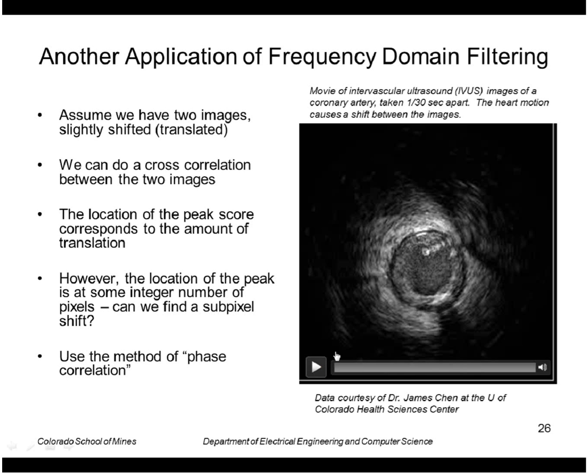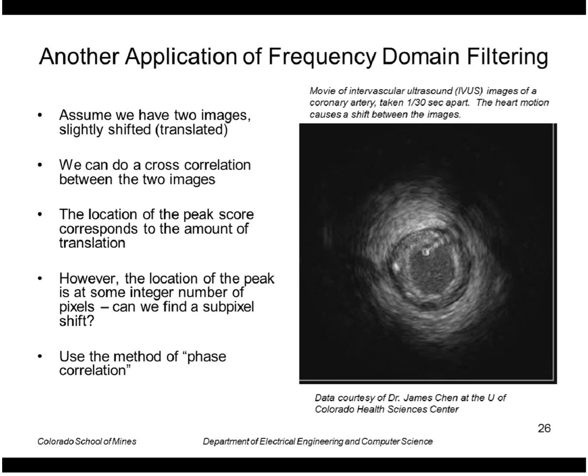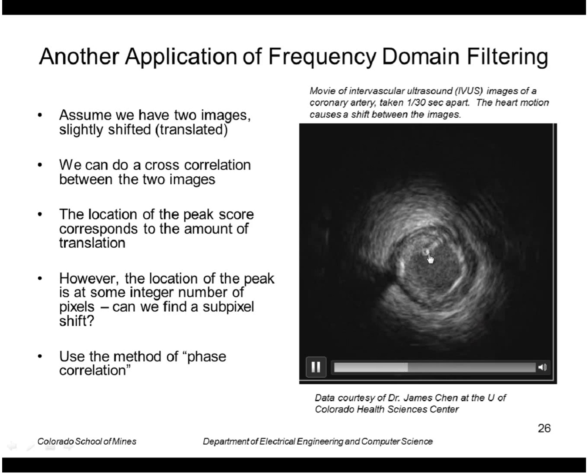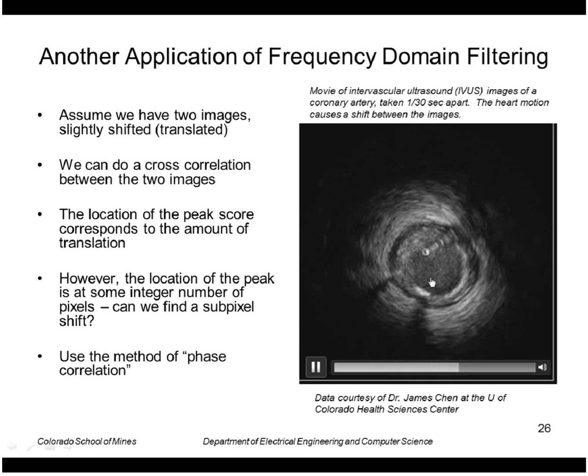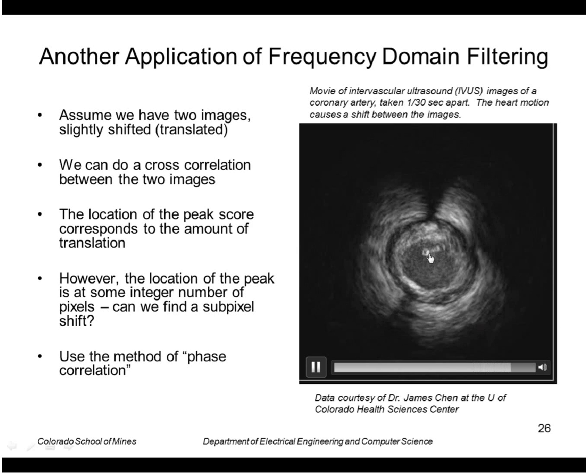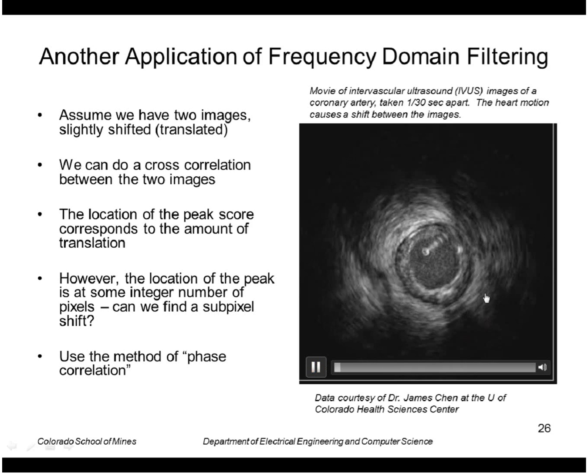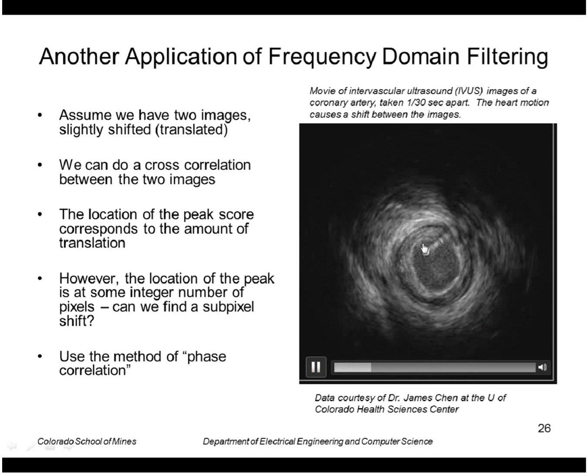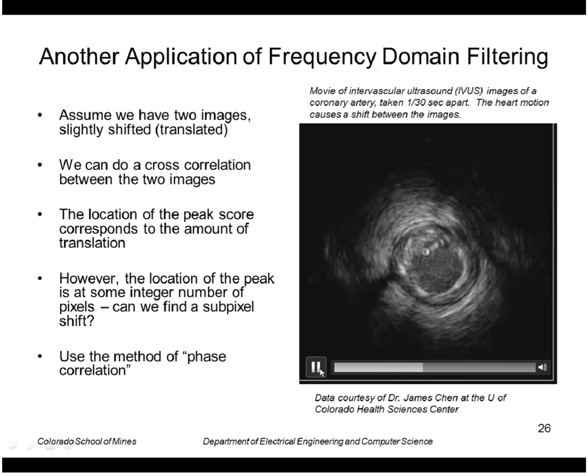This is an example of a video, an intravascular ultrasound image of a coronary artery. The ultrasound transducer is here, wiggling around inside the artery as it's being pulled through, but it appears centered whereas the artery is moving around. What we really like is to have the artery be stationary and the ultrasound transducer allowed to move, so we want to find these shifts.